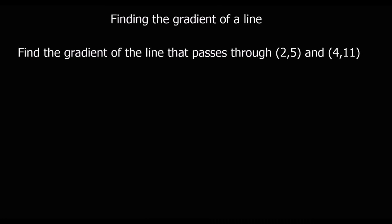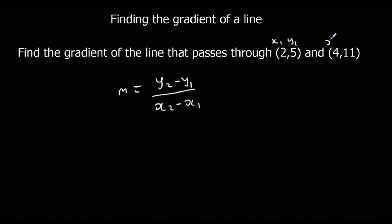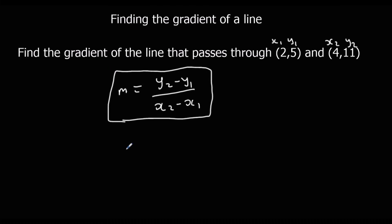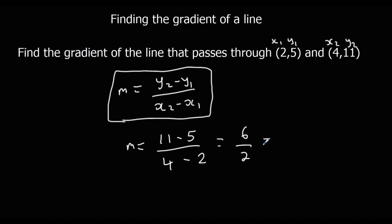In this example, we're not given the graph, so we can work out the gradient in a different way. Instead of looking at the graph, we can say the gradient is the change in y divided by the change in x — how far the difference in y is, over the difference in x. So if we call the points x1, y1, x2, y2, we can substitute them into this formula. So: y2 minus y1 is 11 minus 5, over x2 minus x1 which is 4 minus 2 — that's 6 over 2, and the gradient is 3.